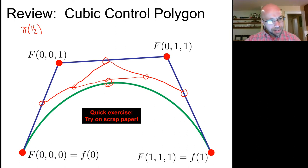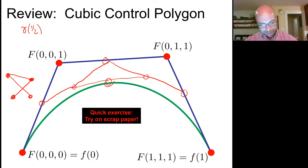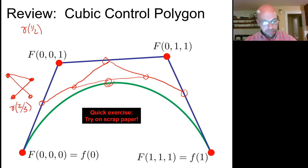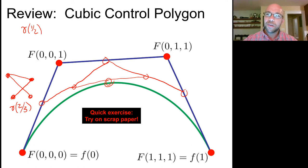I'd encourage you every day after breakfast and brushing your teeth to draw some arbitrary cubic control polygon — if you want, make it complicated by having it intersect itself — and then try to find a point like gamma of 2/3 by subdividing the edges in the control polygon. This is the kind of question I really like to ask on the exam, and I'll probably find a way to do it even though our course is currently online.